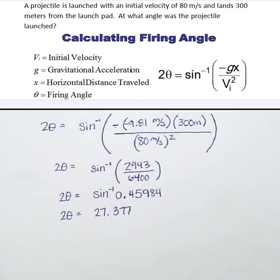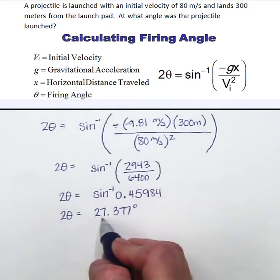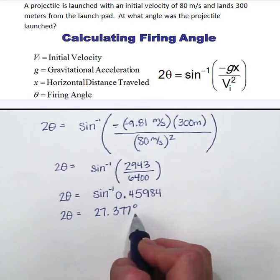And again we want this in degrees so make sure that your calculator is in degree mode. Otherwise you are going to get a much smaller answer. So my 2θ is 27.377 degrees so we are not quite finished.